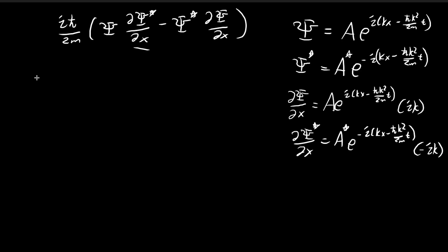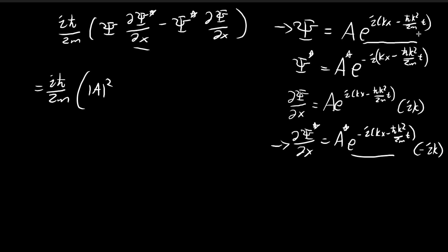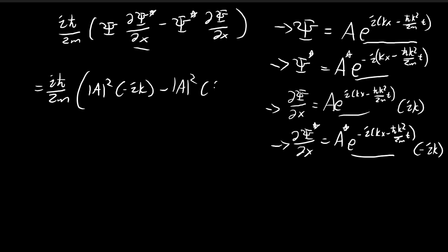Now we substitute everything into this expression. For the first term, ψ multiplied by the derivative of the conjugate: the A's multiply together to give |A|², and the e terms cancel — e to the power of something times e to the power of negative that something equals 1 — leaving negative ik. For the second term, the conjugate multiplied by the derivative of ψ: again the A's give |A|², the e terms cancel to 1, and we have the ik term.